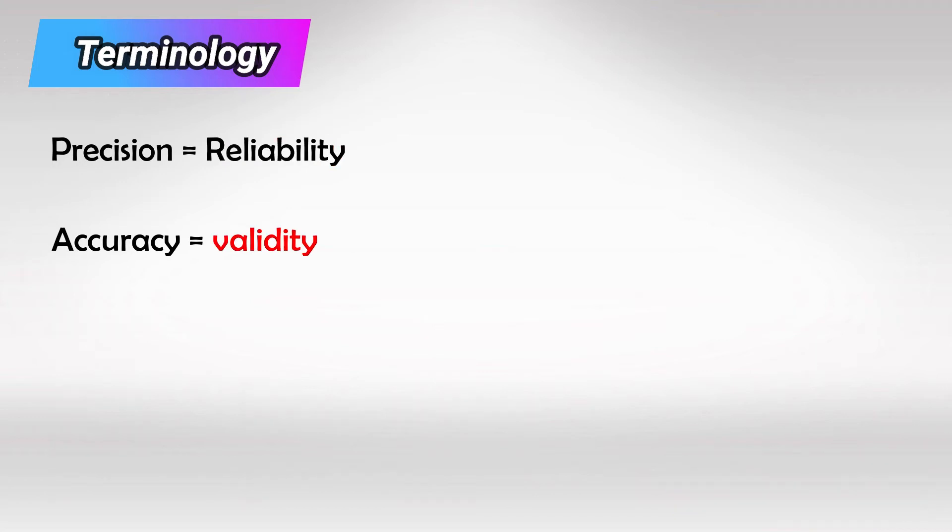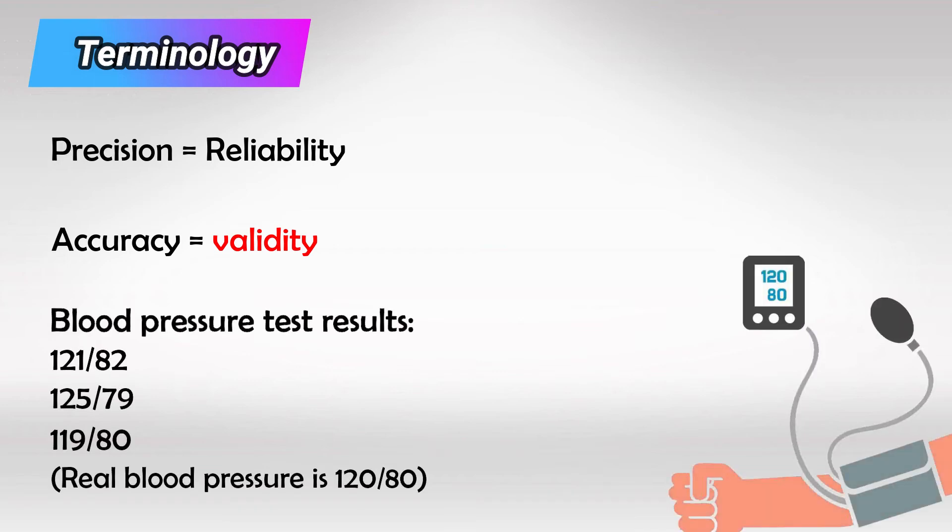Validity or accuracy tests how true the results are. So if the patient's actual blood pressure is 120 over 80 and the machine shows 121 over 82, for example, then the machine has very high validity or accuracy.